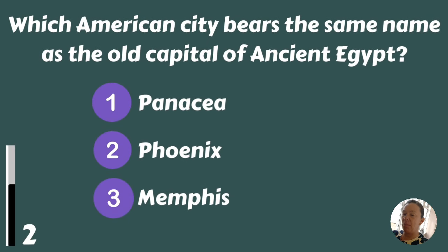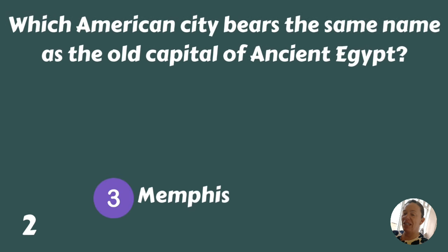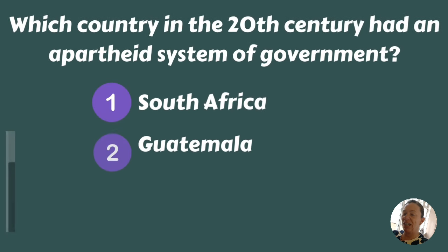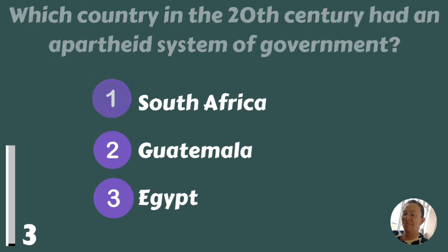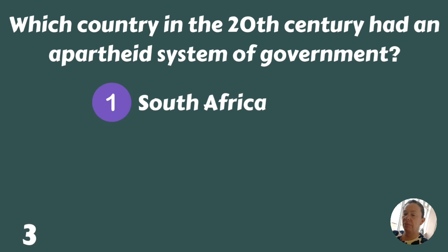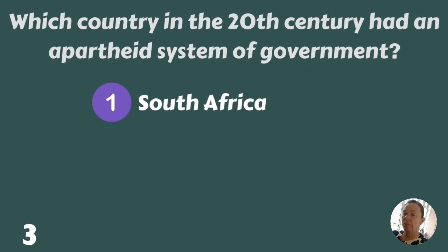Which American city bears the same name as the old capital of ancient Egypt — Panacea, Phoenix, or Memphis? Memphis. Which country in the 20th century had an apartheid system of government — South Africa, Guatemala, or Egypt? It was South Africa.